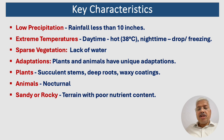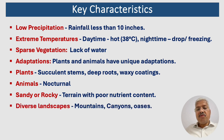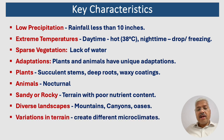The soil in deserts is typically sandy, rocky, or gravelly with poor nutrient content, making it difficult for plants to grow, further contributing to the sparse vegetation. While deserts are often associated with vast sandy plains, they can also have diverse landscapes like mountains, canyons, and oases. These variations in terrain can create different microclimates and support a wider range of species.